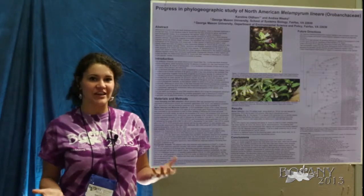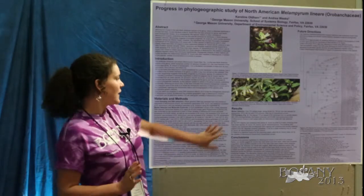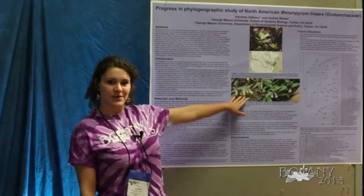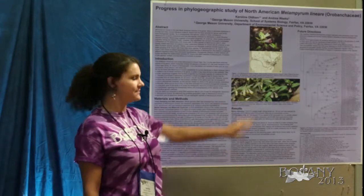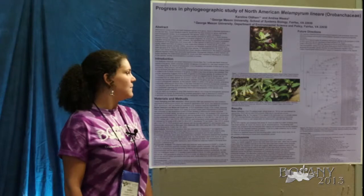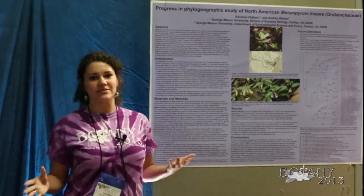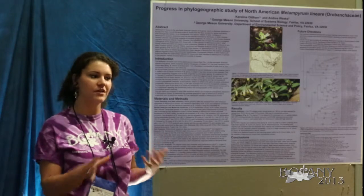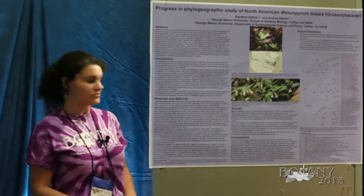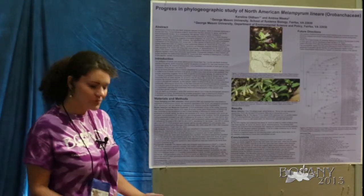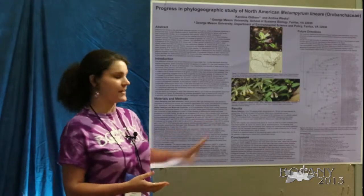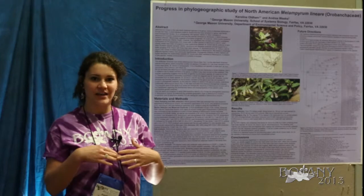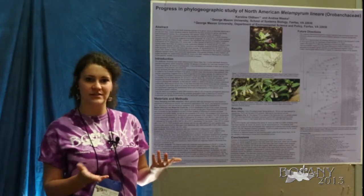Based on morphology, what they suspect and have previously hypothesized is that it's most closely related to the European species Melampyrum pratense. But it's been totally excluded from all of the genetic work that's been done to figure out how the members of the genus are related to each other. So what I've been doing, and what this poster is about, is looking at genetic data and including it in what's previously been done.